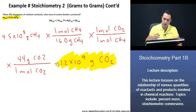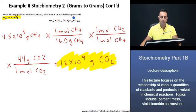It's as simple as that. Thus, when 450 megagrams of methane combusts, 1.2 times 10 to the power of 9 grams of carbon dioxide is produced. Wonderful. Let's now move on to our next slide.